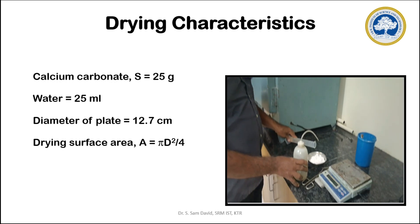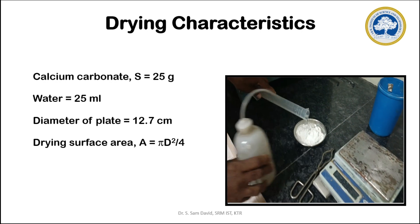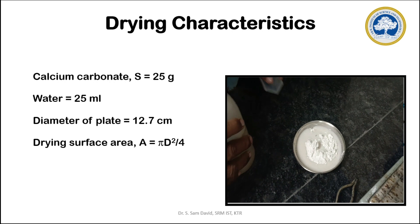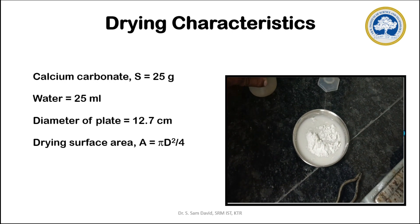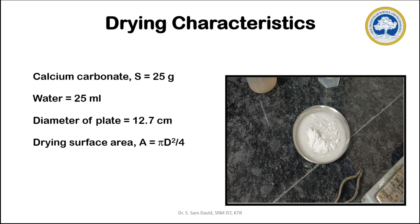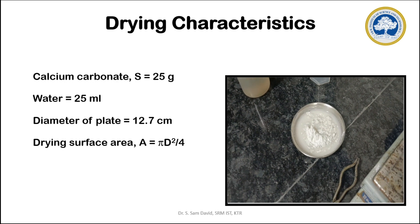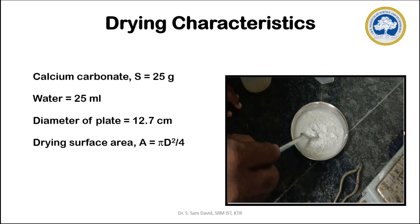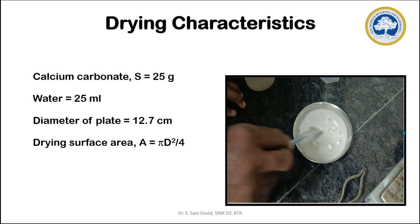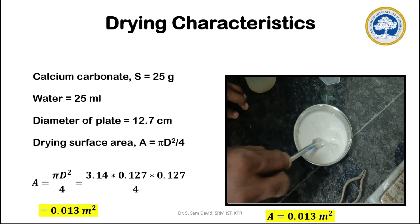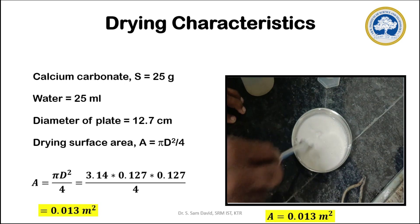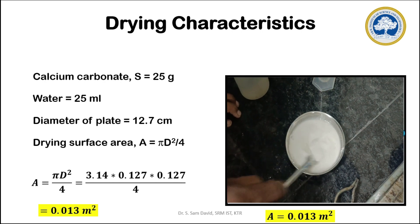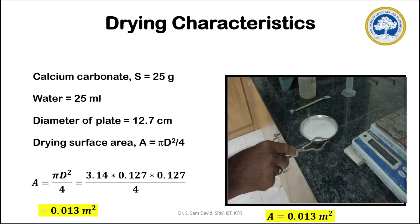The mixture is prepared in a stainless steel plate with a diameter of 12.7 centimeters. The total weight of the wet solid material comes to 50 grams. The drying surface area available for air contact with the wet material is calculated using the formula π·d²/4. With the known plate diameter, the available drying surface area comes to 0.013 square meters.